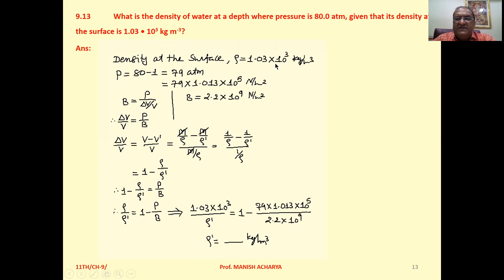Now see, density at the surface is given to you: 1.03 times 10 raised to 3 kilograms per meter cubed. For the given amount of water, mass is the same.